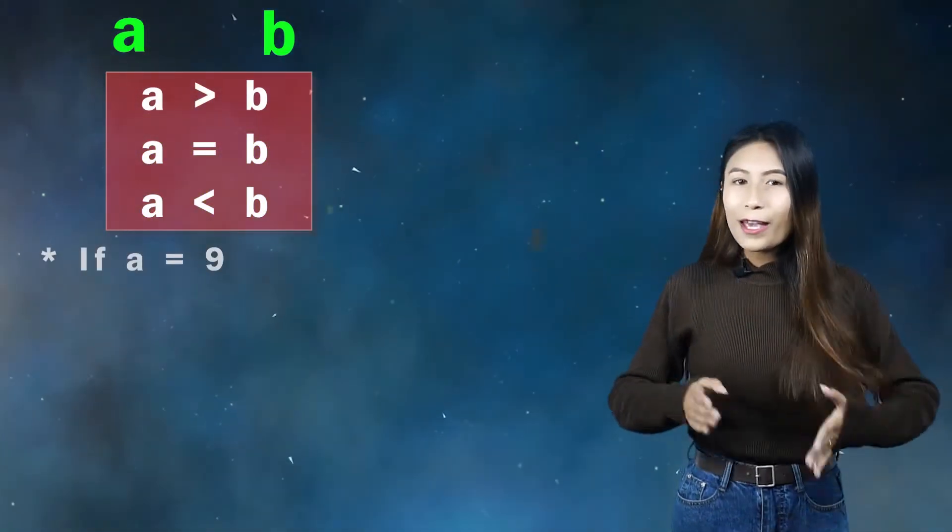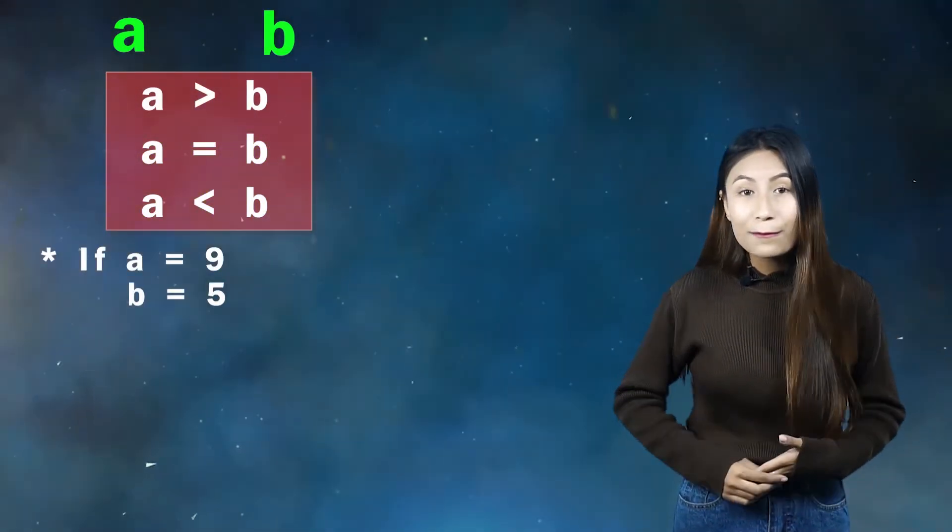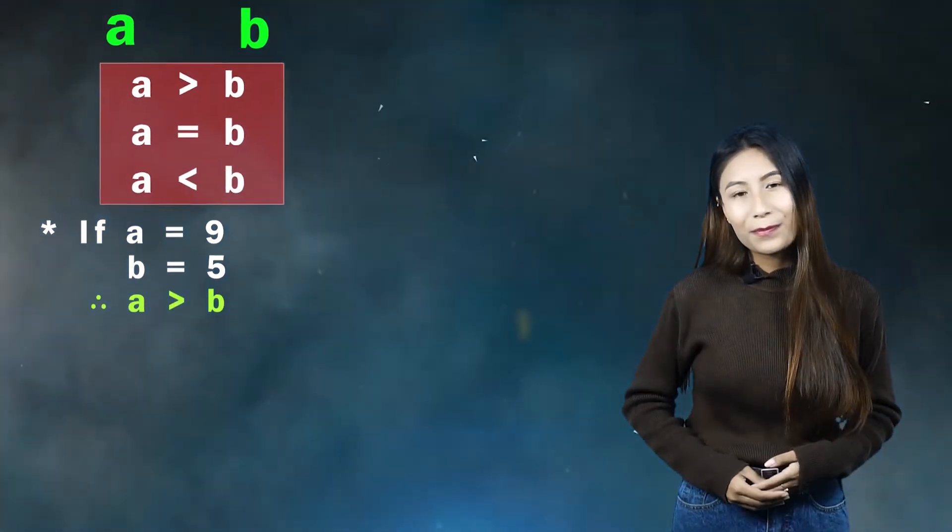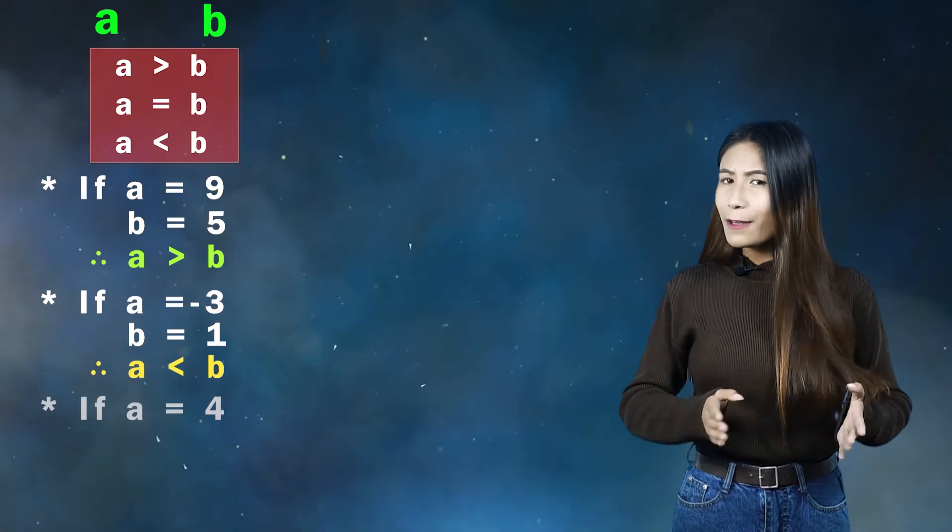If a is 9 and b is 5, a is greater than b. Similarly, if a equals negative 3 and b equals 1, a is less than b. And if a equals 4 and b equals 4, a is equal to b.